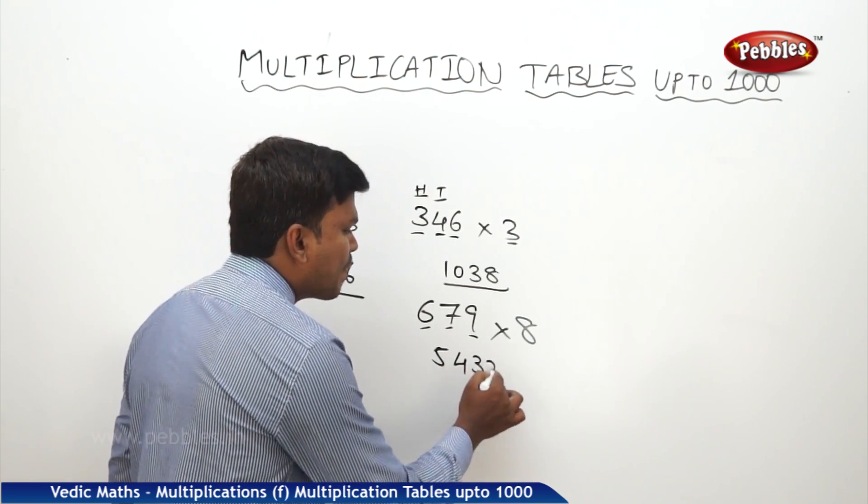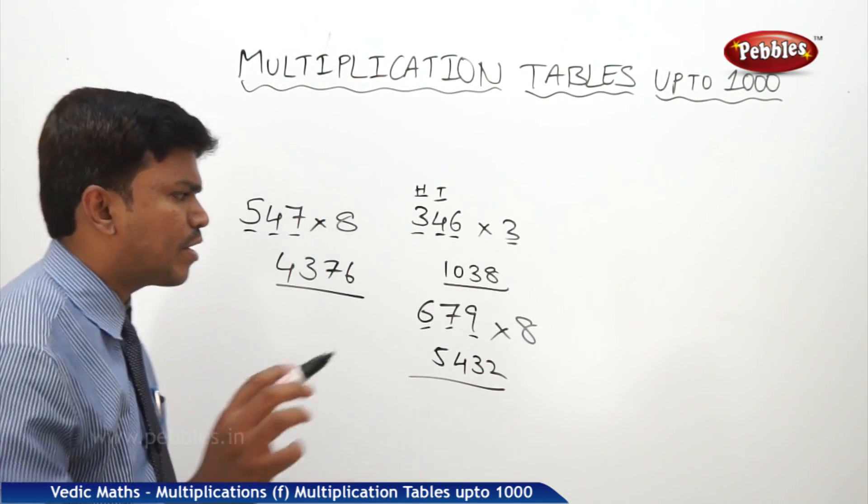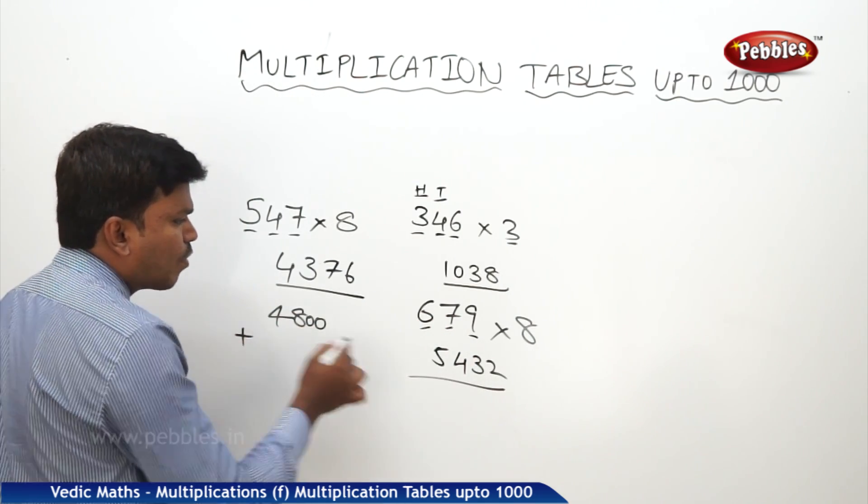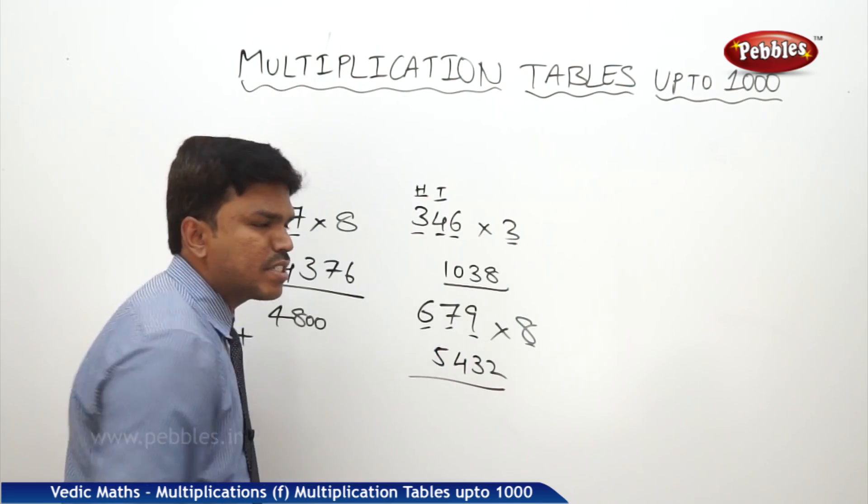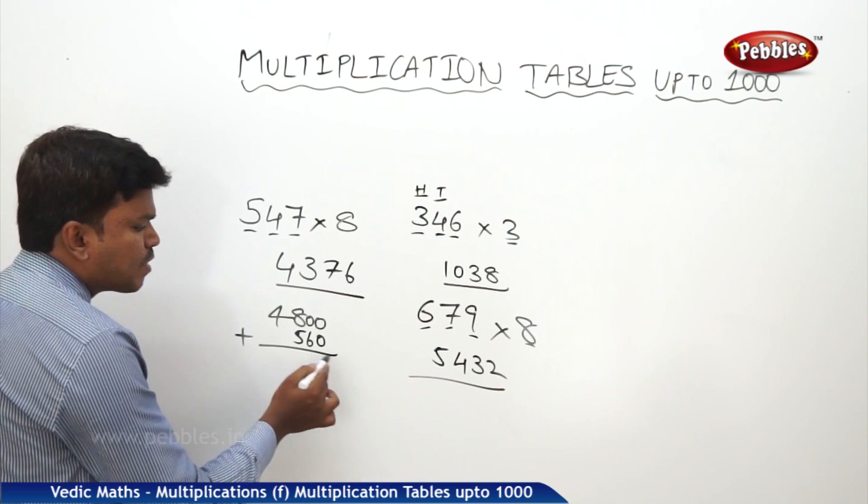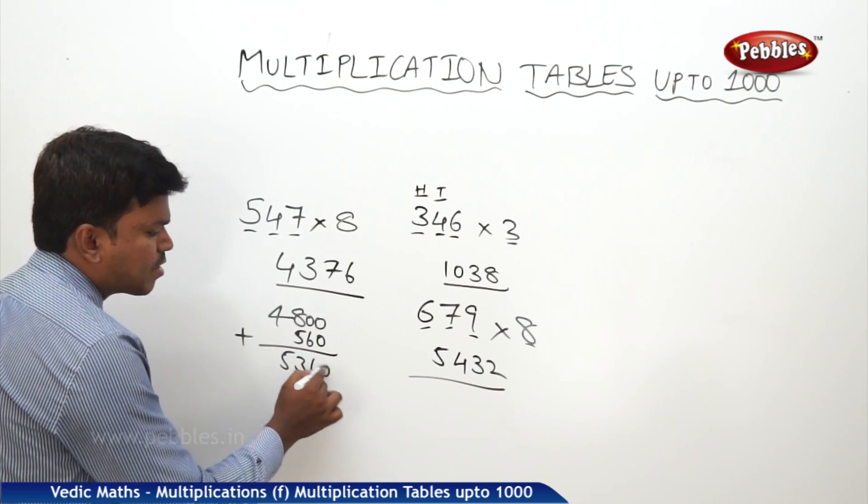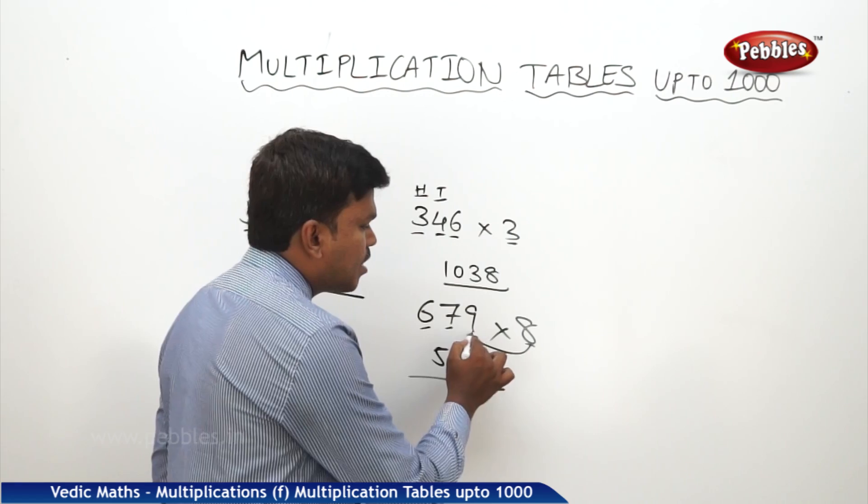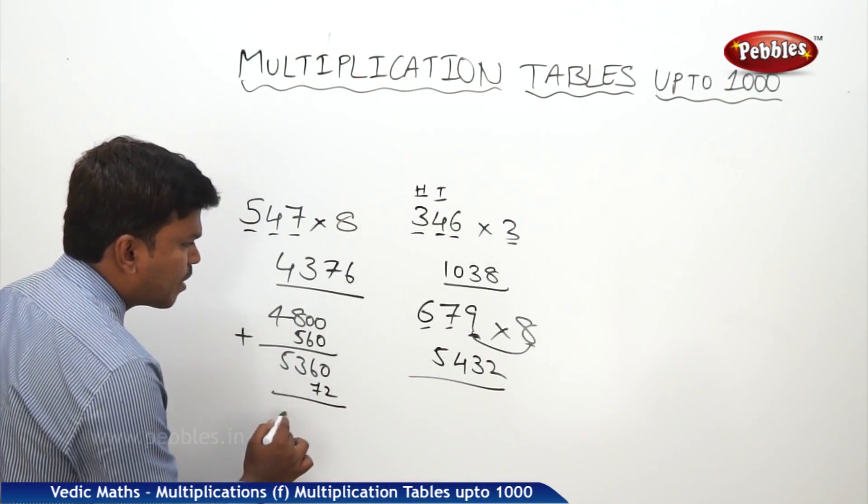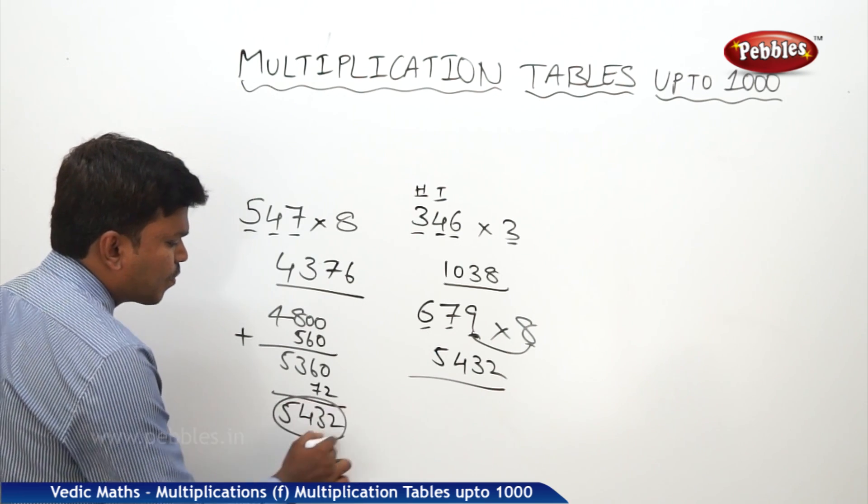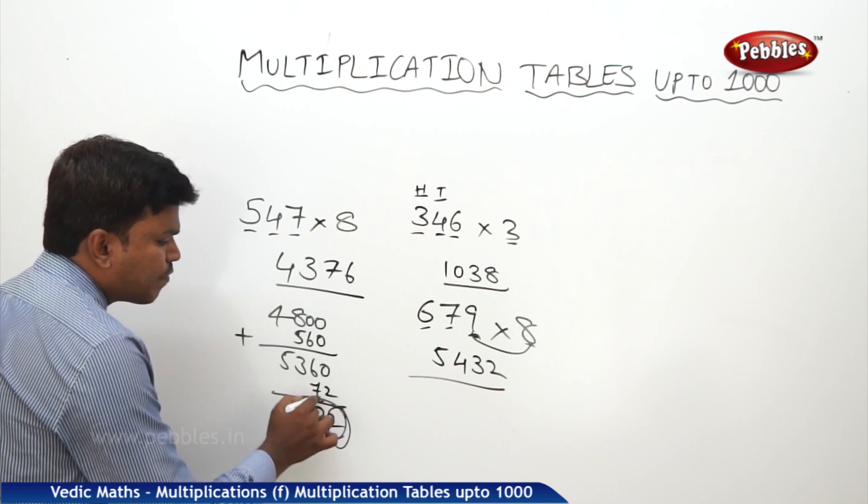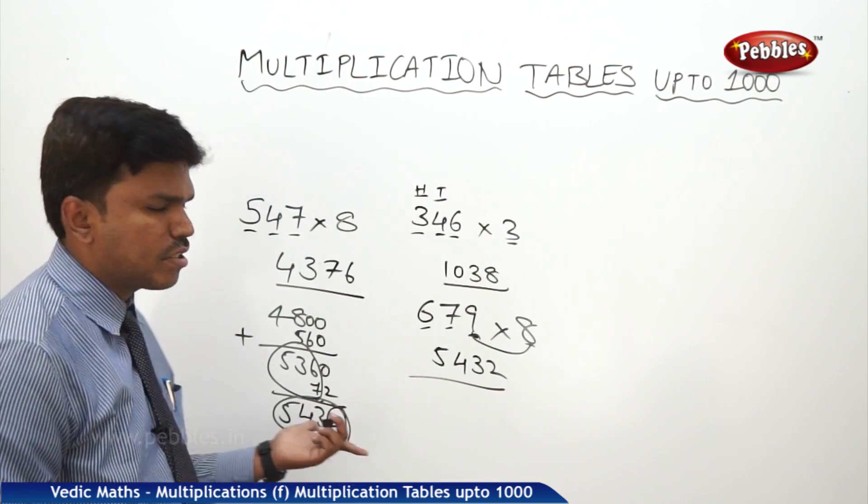I am adding in the mind only. See here, I will tell you the steps. 8 sixes 48, so 4800. First add this 4800 to the next one, 8 sevens 56, take it as 560. I am adding these two first. 4800 plus 560, 5360. For this one again I am adding the last one, 8 nines 72. Adding 72 here, how much I will get? 5432. Simply 0 plus 2 will get 2 as it is. What is 536 plus 7? 543.